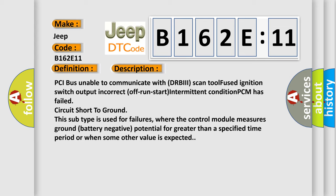PCI bus unable to communicate with DRBII scan tool. Fused ignition switch output. Incorrect off-run start. Intermittent condition. PCM has failed circuit. Short to ground. This subtype is used for failures where the control module measures ground battery negative potential for greater than a specified time period or when some other value is expected.